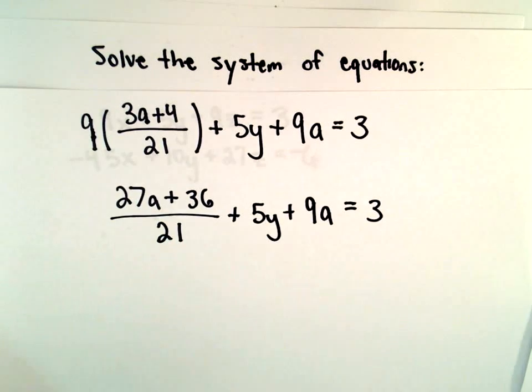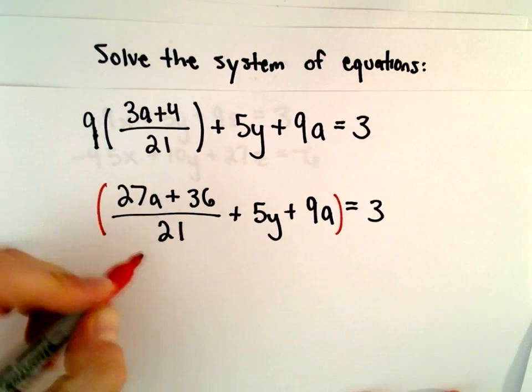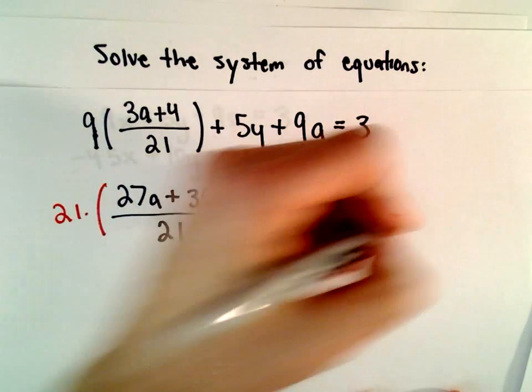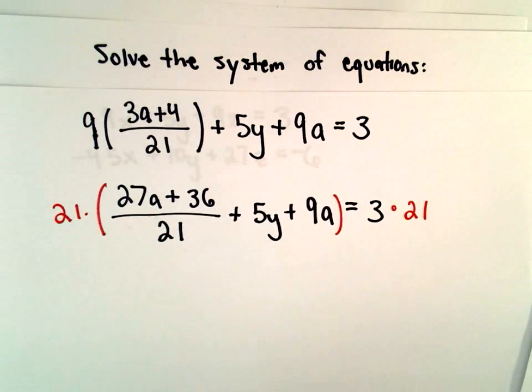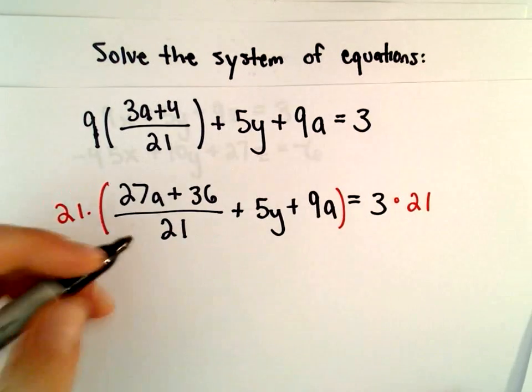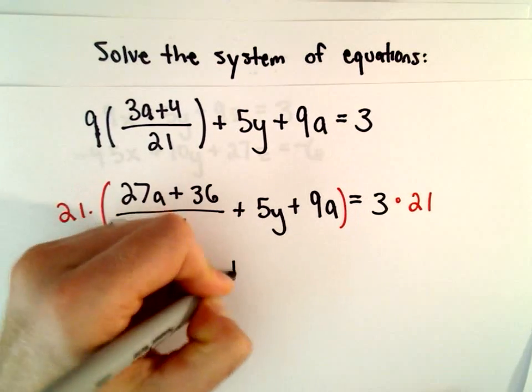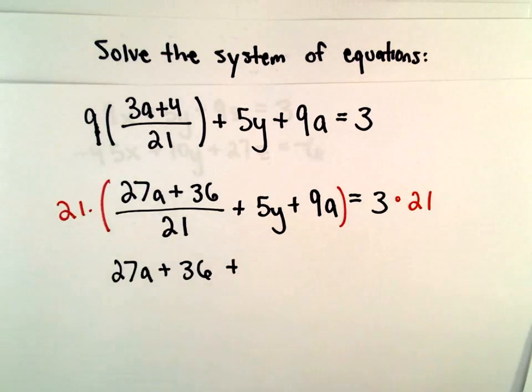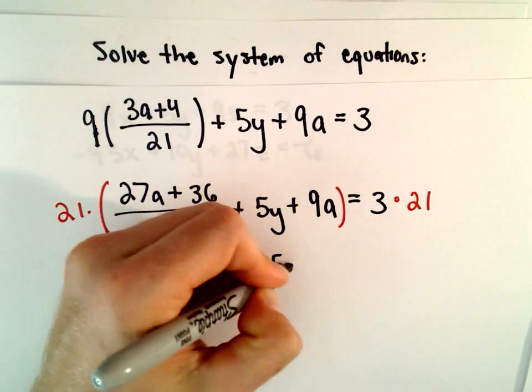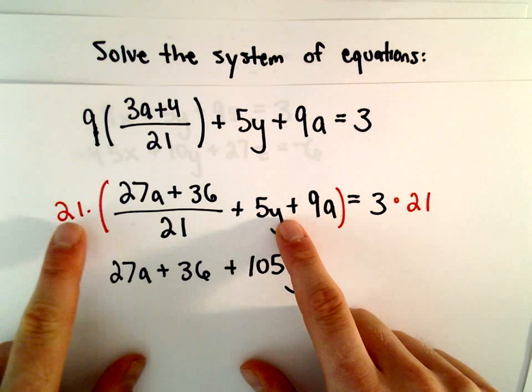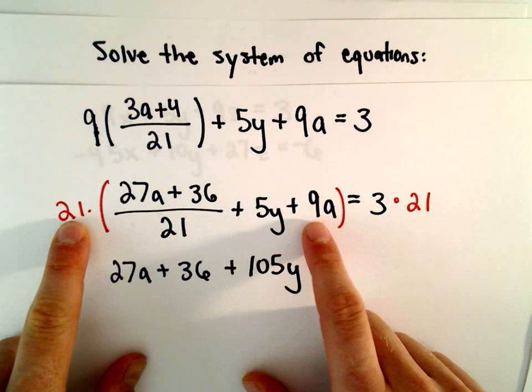To get rid of the fraction with the 21 in the denominator, I'm going to multiply both sides by 21. 21 divided by 21 would cancel. So we would have 27a plus 36. 5 times 21 will be 105. Got to include the y.